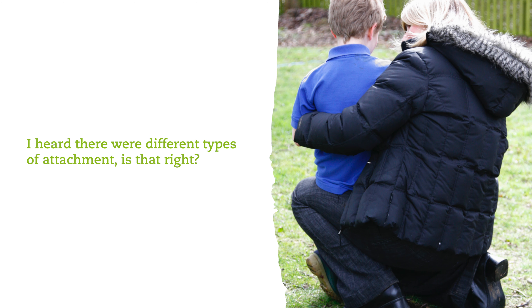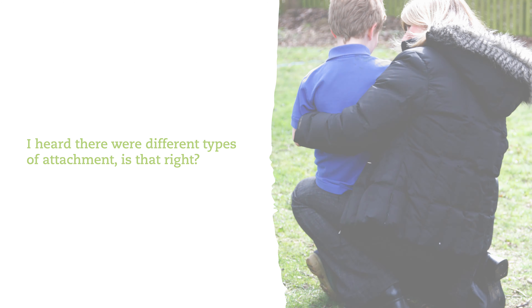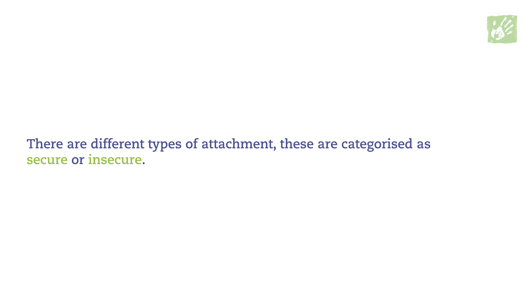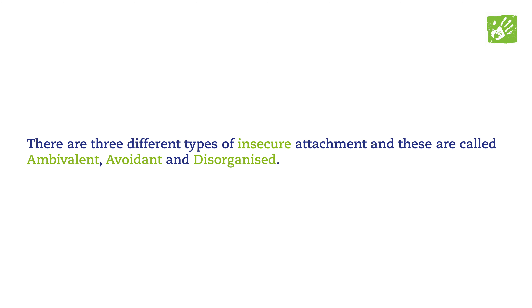I heard there were different types of attachment — is that right? Yes, that's right. There are different types, and these are categorised as secure, which most people are, or insecure. And there are three different types of insecure attachment, called ambivalent, avoidant, and disorganised. These styles of attachment refer to the child's ability to build secure, safe relationships with others.